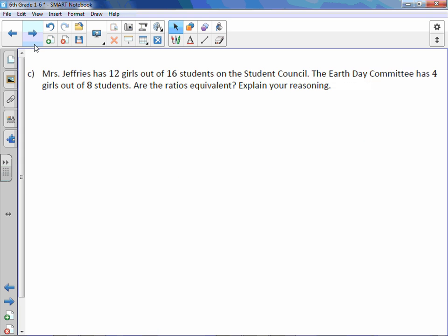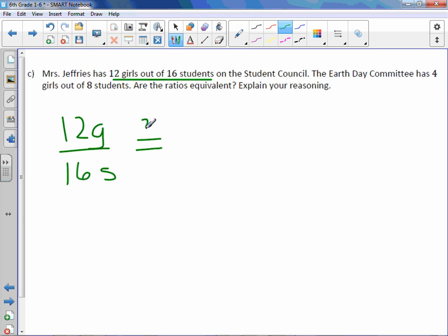And letter C. Mrs. Jeffries has 12 girls out of 16 students on the student council. The Earth Day committee has 4 girls out of 8 students. Are the ratios equivalent? Explain your reasoning. So let's start with 12 girls out of 16 students. And we want to know, is this equal, question mark, to 4 girls out of 8 students?